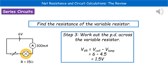Next, we work out the potential difference across the variable resistor. Because in a series circuit the potential difference across each component adds up to the battery's potential difference, we know the battery is 6 volts and the lamp is 4.5 volts. So 6 minus 4.5 gives us a potential difference of 1.5 volts across the variable resistor.